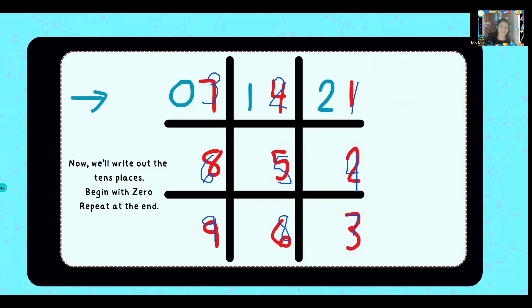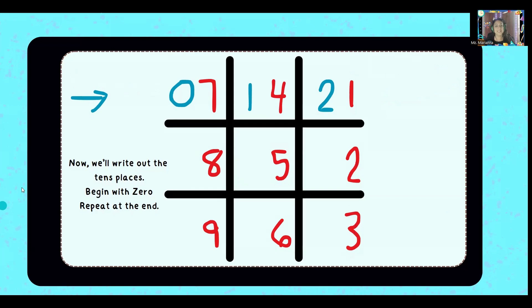Next, we're going to put in the tens places. Begin with number zero right here. Put your zero. Okay. Next to that, you're going to put a one and then a two. Let's stop right there because this last row is going to repeat itself.